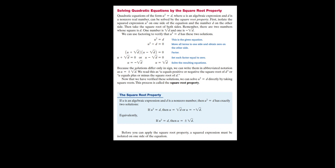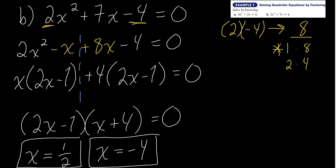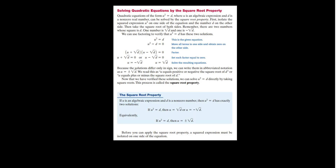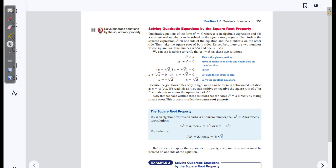Before we begin, recall how we solve problems: if there's subtraction on one side, we add to cancel it; if there's multiplication, we divide. We do opposite operations. Multiplication and division are opposites; addition and subtraction are opposites. Similarly, squares and square roots are also opposite operations.